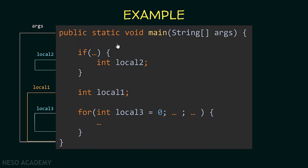Now let's see some other examples. The args variable can be used from the beginning to the end of the method. The variable declared in the if statement can be used from where it is declared until the end of the if statement. The integer local1 can be used starting from its declaration until the end of the method. Finally, local3 can only be used inside the for loop. Also note that local1's scope includes the for loop, so local1 can be accessed inside the for loop.